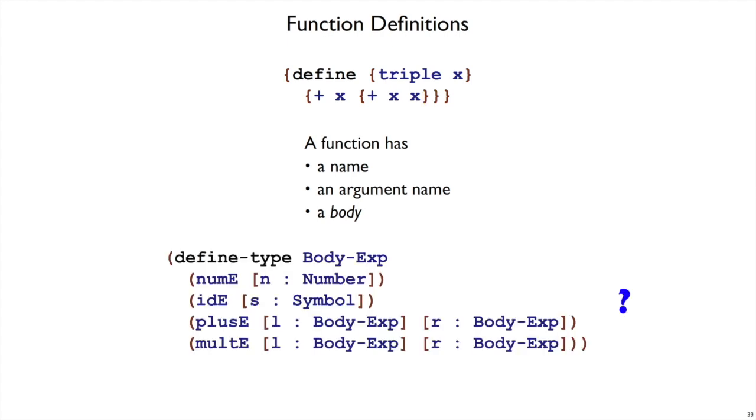It looks a lot like expressions. You might imagine that we have body expressions, which has numbers and plus and mult, just like expressions did. The difference is when you're in the body of a function, you can also have identifiers. You can have references to the argument, and that's where I've called IDE.